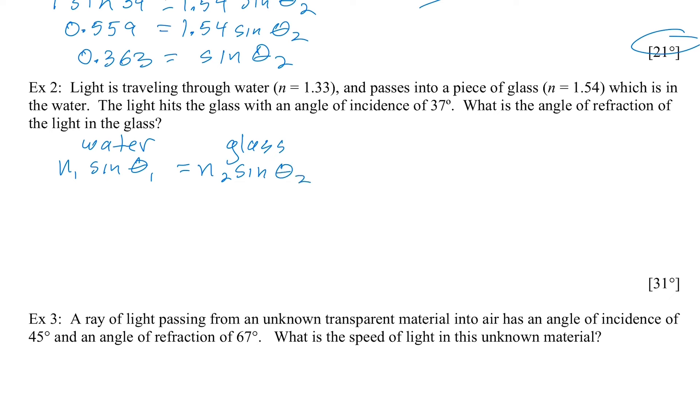In the water, N is 1.33. And these numbers will be given to you on tests and so on because you're not expected to memorize them. Water is standard, but glass isn't always 1.54. It depends on the type of glass. So the only one that's fundamentally important to know is that air is 1.0.